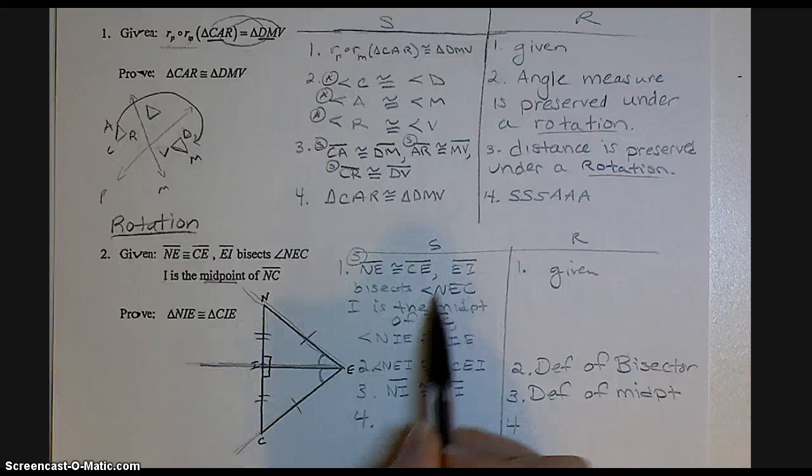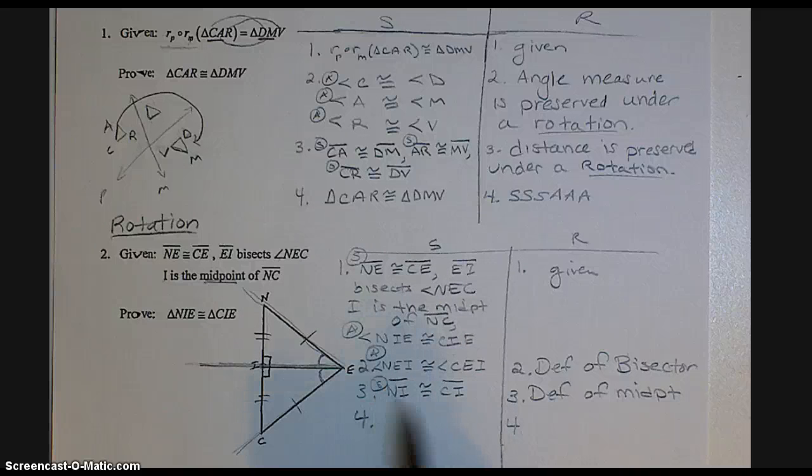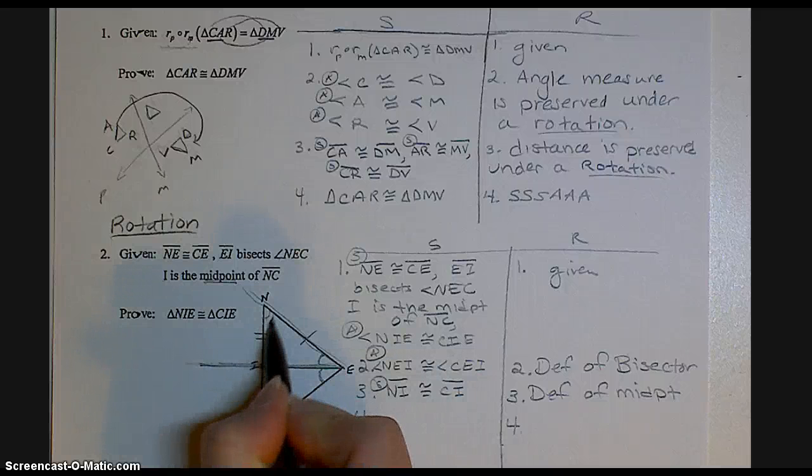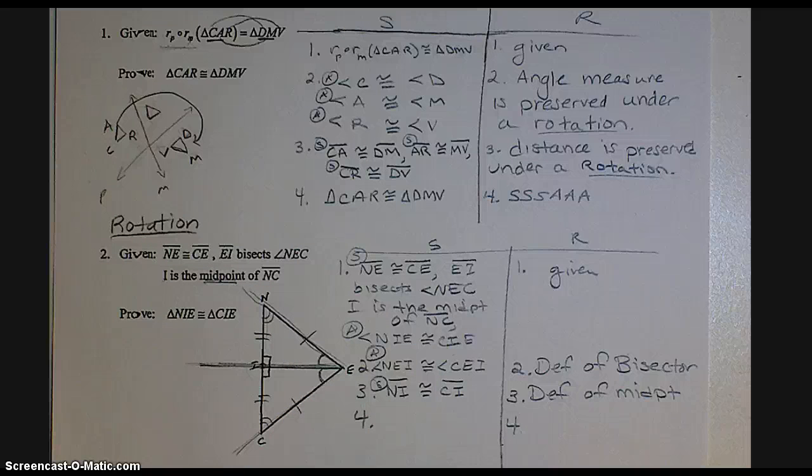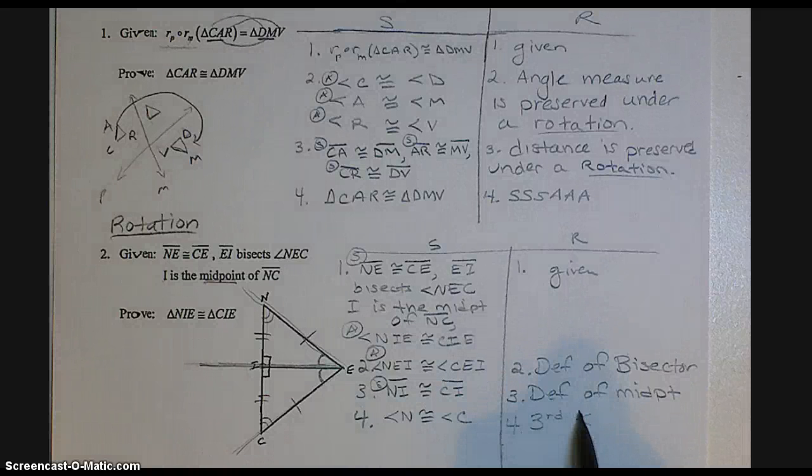I've got a side, I have an angle, I have another angle, and I have a side. So I'm missing a side and I'm missing another angle. Anytime you're missing the third angle, that's always going to be the third angle theorem. So in this case, my last angles I'm missing, angle N congruent to angle C, because third angle theorem.